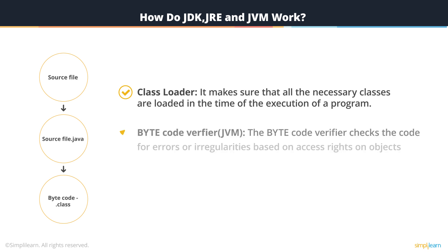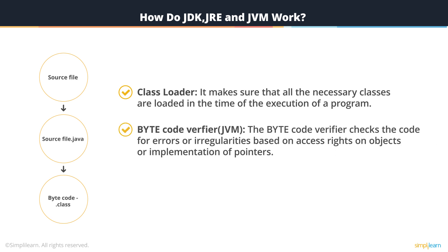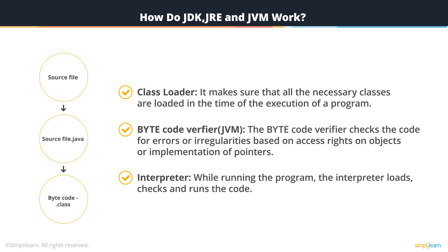Next, ByteCodeVerifier, which is part of the JVM. The ByteCodeVerifier checks the code for errors or irregularities based on access rights on objects or implementation of pointers. It makes sure that the code fulfills the specifications of JVM and does not break system integrity. And finally, the Interpreter, also part of the JVM. While running the program, the interpreter loads, checks, and runs the code. The implementation is made by the JRE, which is the final process.